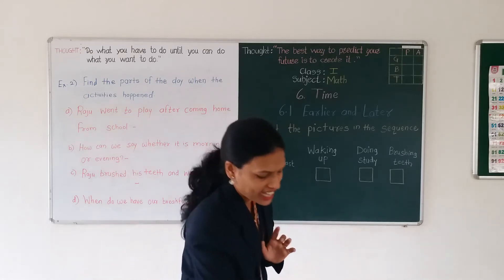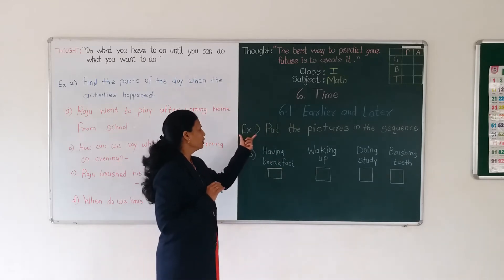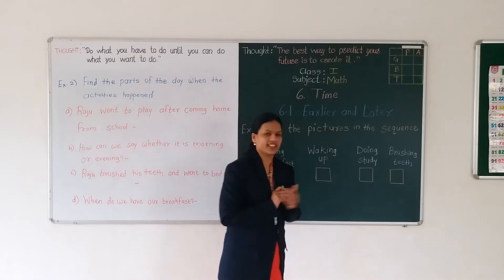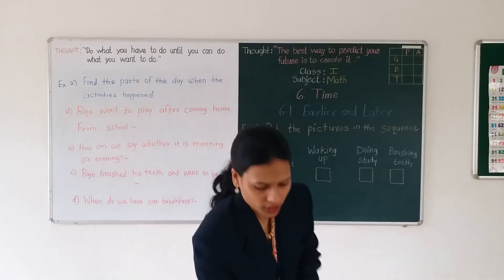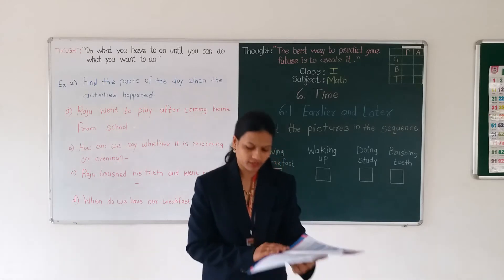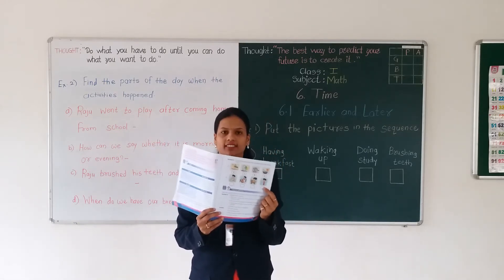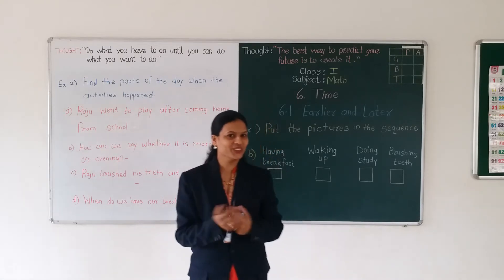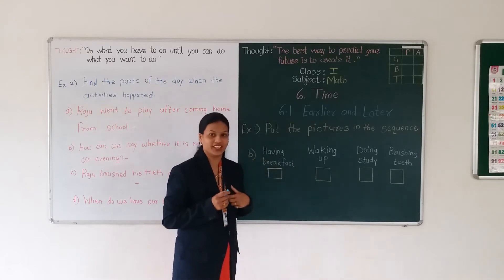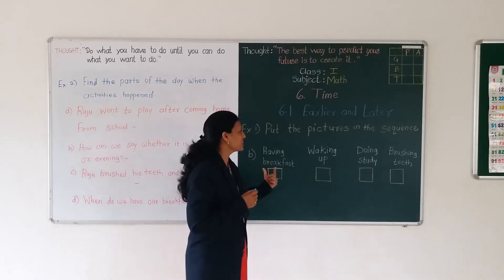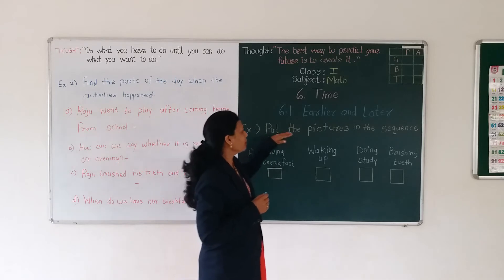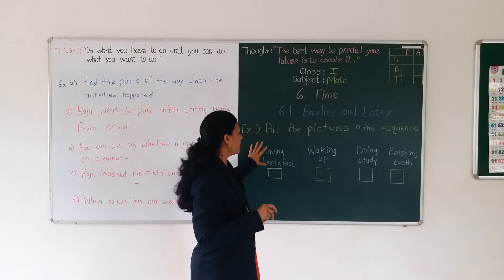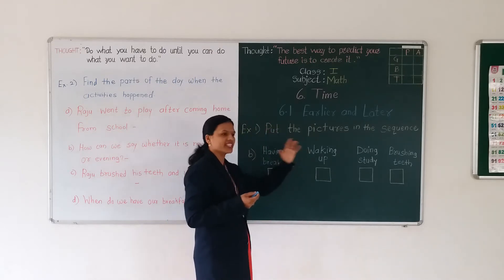Shall we start today's class? Today we have to solve - the first example is: put the pictures in the sequence. As you can see in the textbook, I will show you. Textbook page number 17 - they have given pictures, but instead of drawing the pictures, I am just writing what the activities are. So the question is: put the activities in the sequence. Below that we have boxes. Can you tell me which is the first event?